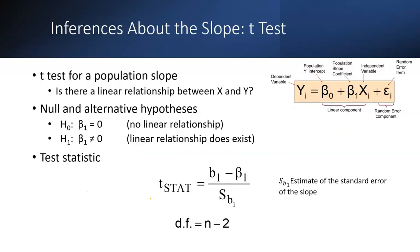For causation, we use the t-test. In the t-test, we form a hypothesis: the null hypothesis H0 states there is no linear relationship, and the alternative hypothesis H1 states that a linear relationship does not exist — or rather, does exist. The t-test for the population slope asks: is there a linear relationship between X and Y?